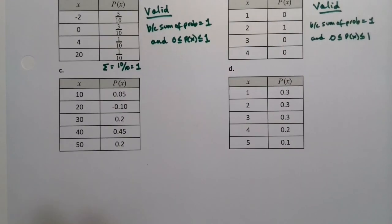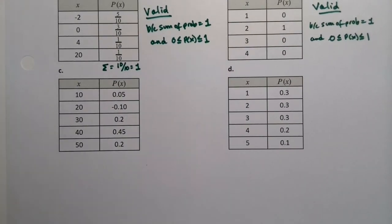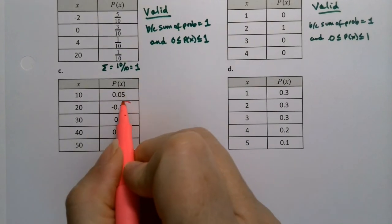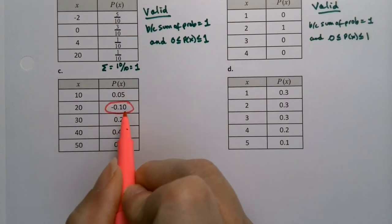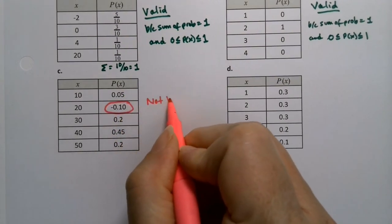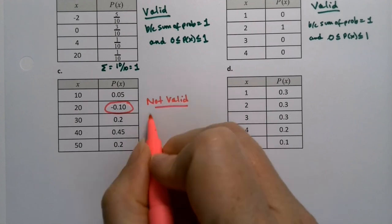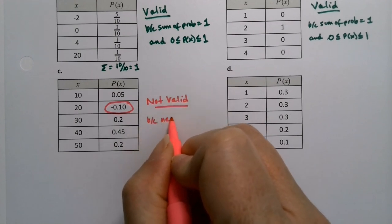This one, I don't have to go anywhere. I know it's no good. I can spot it from a mile away. It's this right here. Negative probabilities are not allowed. So not valid, because negative probabilities are impossible.